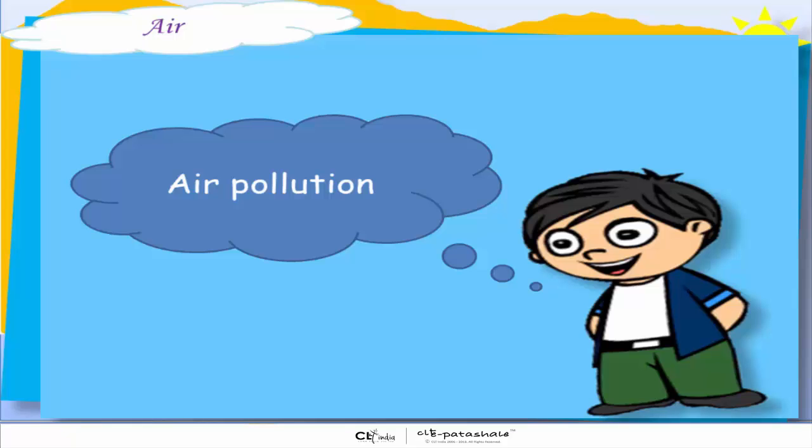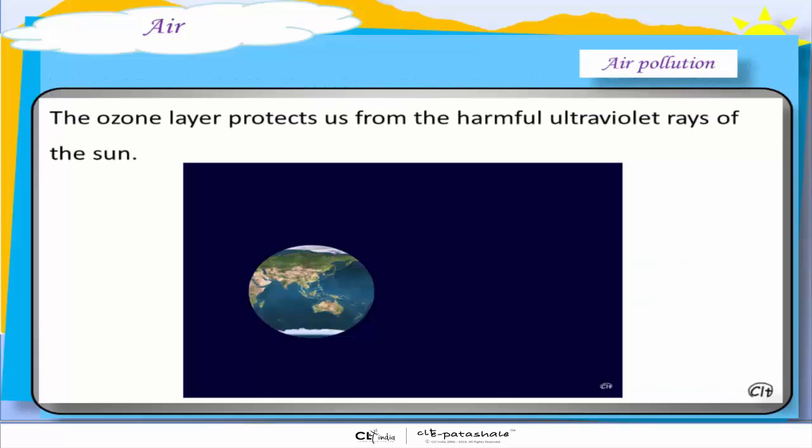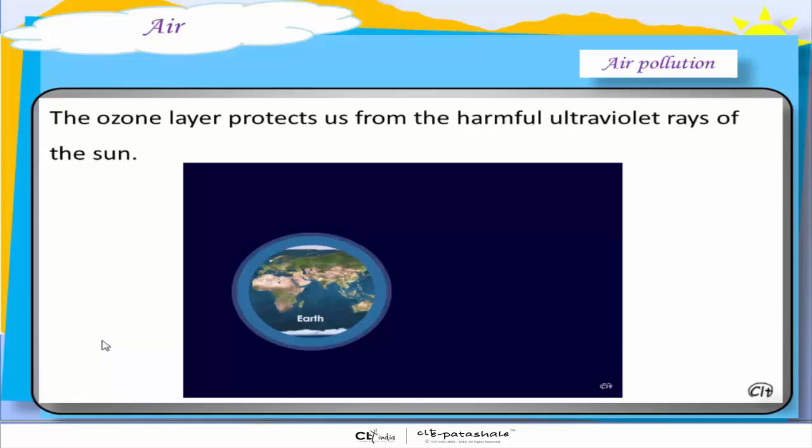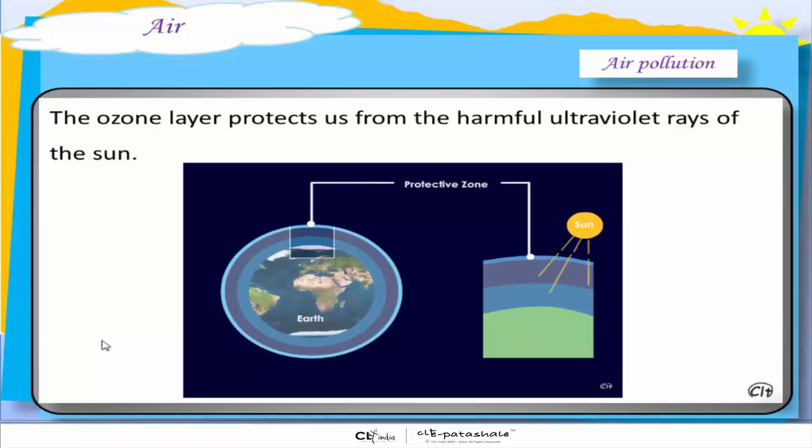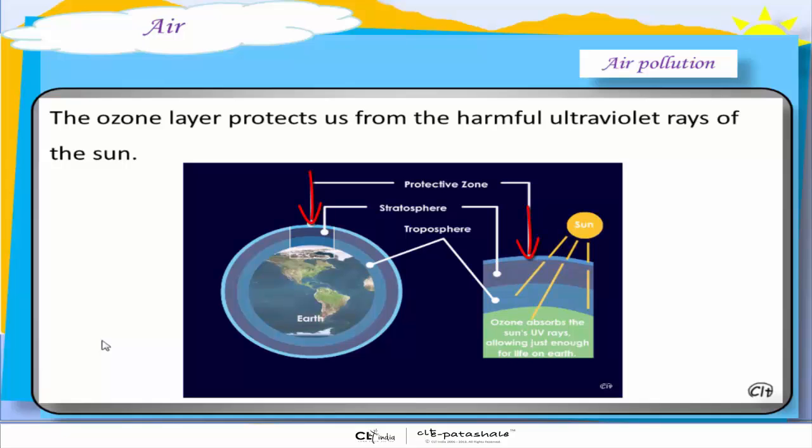Children, let's talk about air pollution. This is the earth on which we live. Our atmosphere above the earth's surface is composed of many layers. The closest to us is called troposphere, above that is stratosphere, and above that is the protective ozone layer.